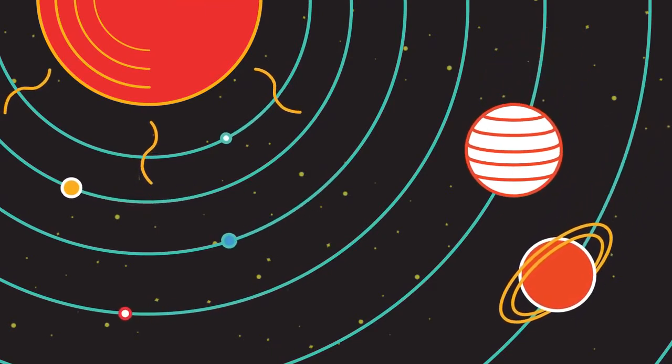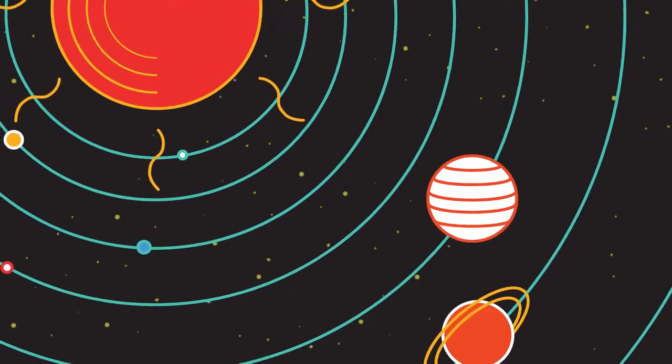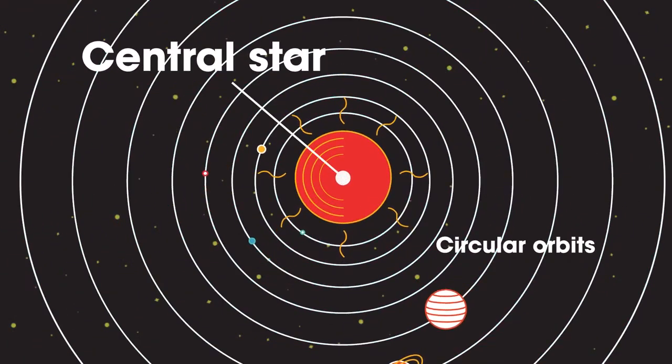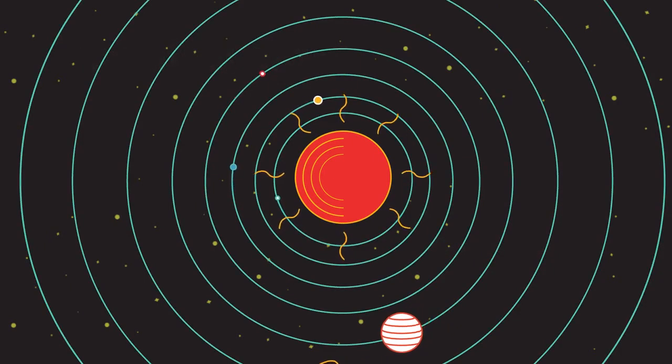So what does speed and velocity have to do with planets? Most planets have nearly circular orbits around a star, so the planet's speed will remain constant, but because the direction changes, so does the velocity.